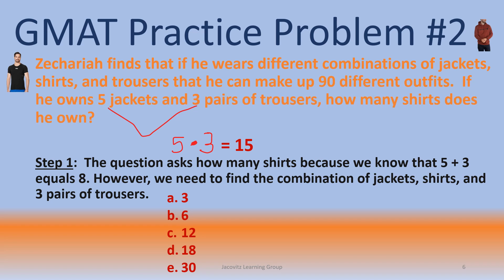Okay, for our last problem, this is just a practice problem. Number two. Zechariah finds that if he wears different combinations of jackets, shirts, and trousers, that he can make up 90 different outfits. So if he owns five jackets and three pairs of trousers, how many shirts does he own?